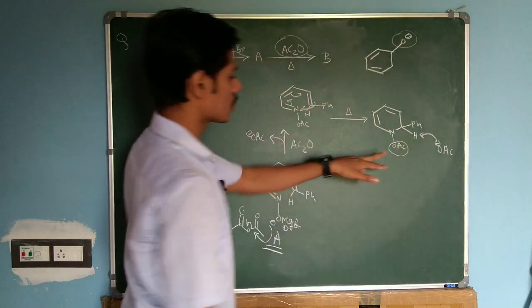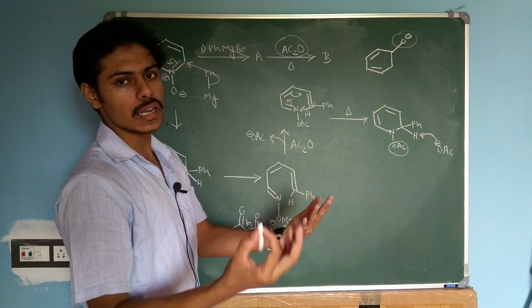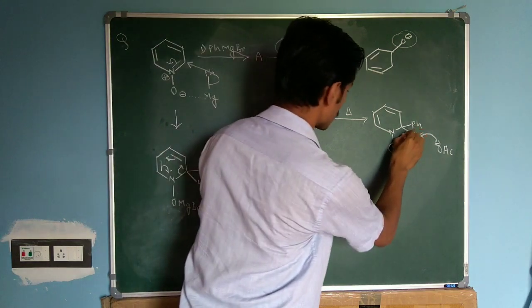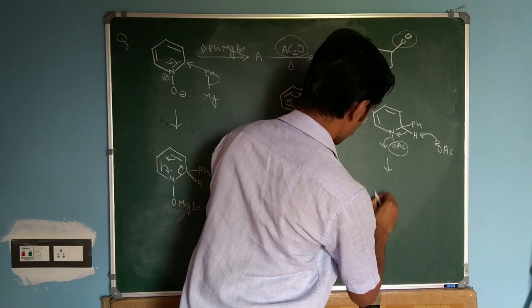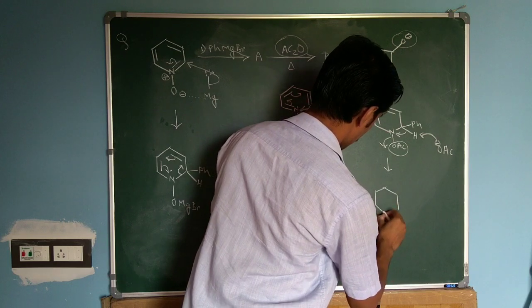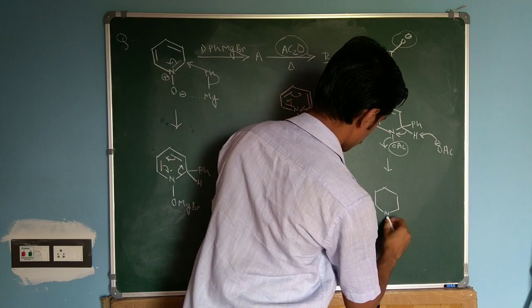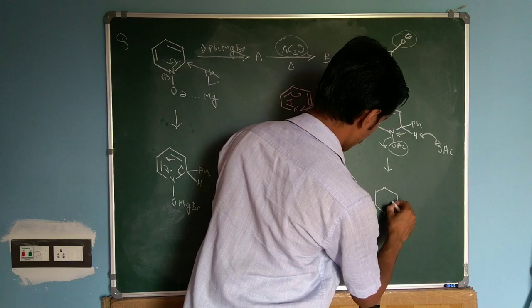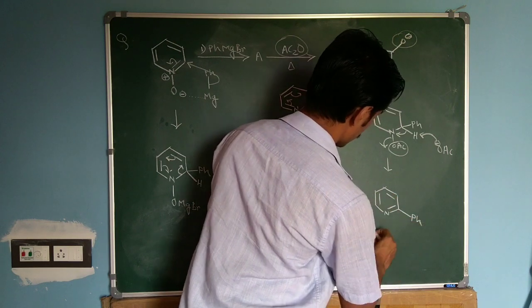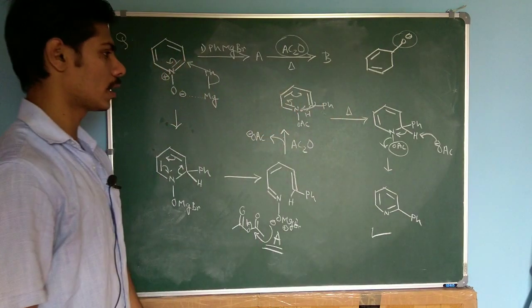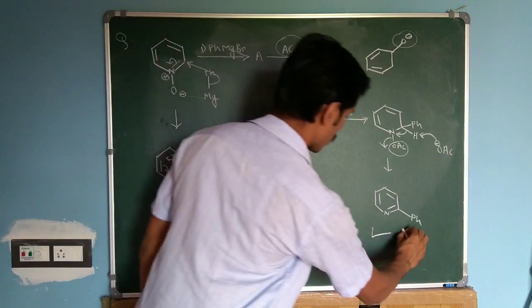And you can see by this acetylation it becomes a better leaving group than OH minus. So it can leave and you will get this N and here you have this phenyl. So this is the product you will get out of this reaction. This is your product B.